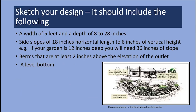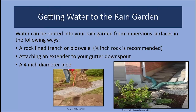Draw a sketch of your rain garden. Typically rain gardens have a width of about 5 feet and a depth anywhere from 8 to 28 inches. Side slopes should be 18 inches horizontal length to 6 inches of vertical height. For example, if your garden is 12 inches deep, you'll need 36 inches of slope. Berms should be at least 2 inches above the elevation of the outlet. Your rain garden should have a level bottom to ensure that all the water spreads out equally and drains at about the same rate.